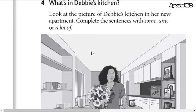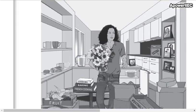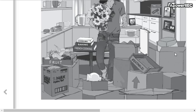So this is the picture of Debbie's kitchen in her new apartment so you're going to complete the sentences about her new apartment with some, any, and a lot of.